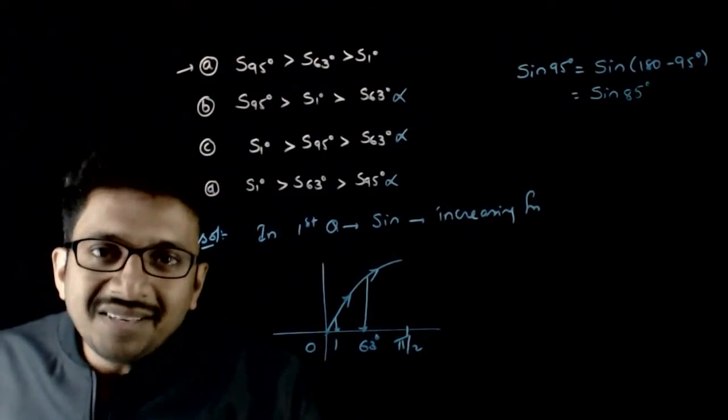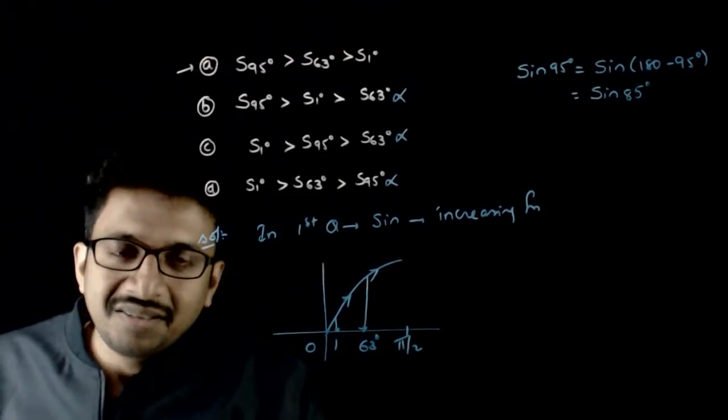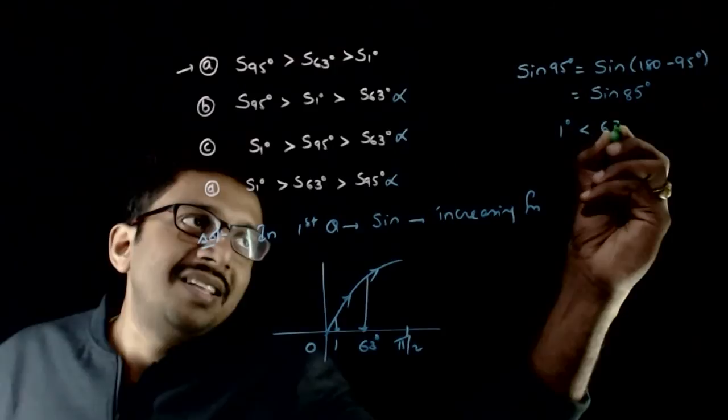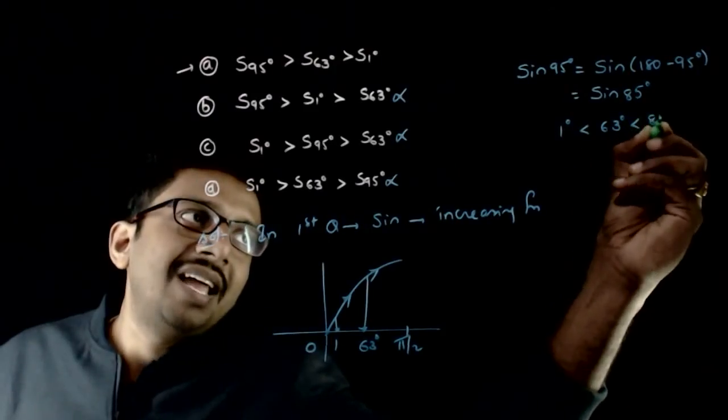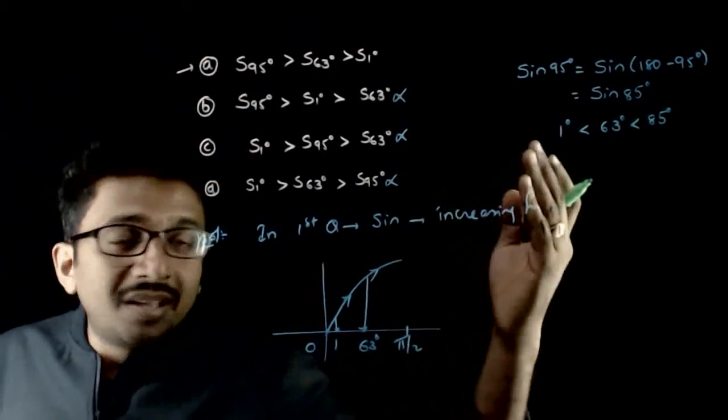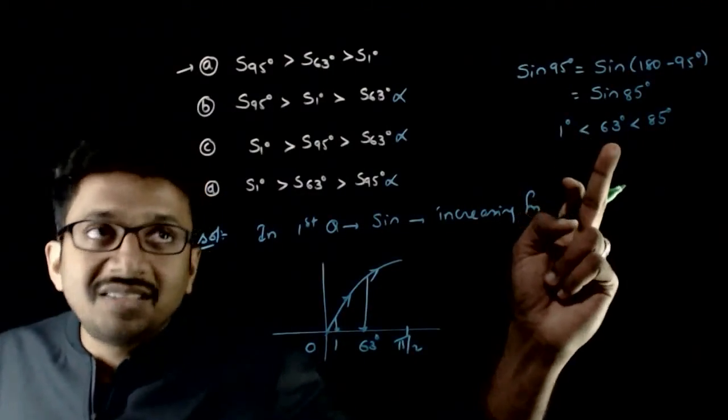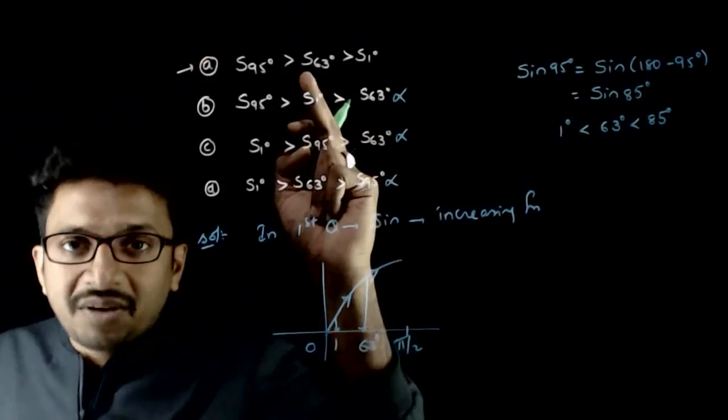So sin 95 is same as sin of 180 minus 95, which is nothing but 85 degrees. So sin 95 is equivalent to sin 85 degrees. Obviously, 1 degree is less than 63 degrees is less than 85 degrees. So the values of sin also follow the same order. Sin 85 is more than sin 63 is more than sin 1.